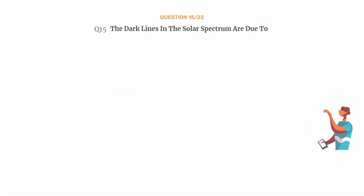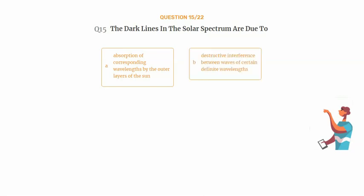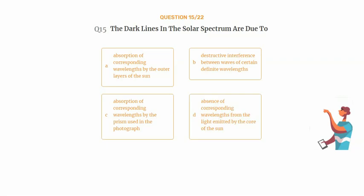Question number 15. The dark lines in the solar spectrum are due to. Option A: Absorption of corresponding wavelengths by the outer layers of the sun. Option B: Destructive interference between waves of certain definite wavelengths. Option C: Absorption of corresponding wavelengths by the prism used in the photograph. Option D: Absorption of corresponding wavelengths from the light emitted by the core of the sun.